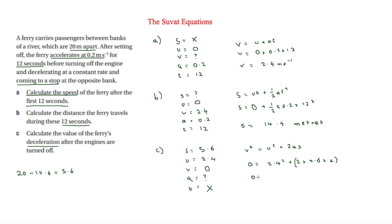Rearranging — as SUVAT often involves rearranging — 11.2A equals minus 5.76, so A equals minus 0.51 metres per second squared (to two significant figures). The negative sign confirms deceleration, so we can be confident this is the right answer.